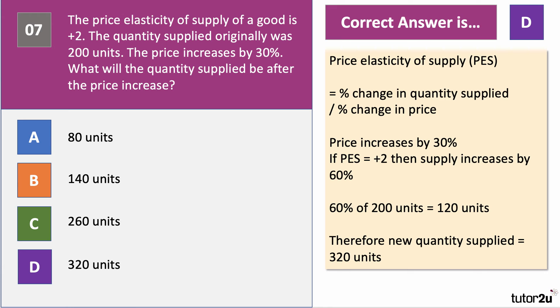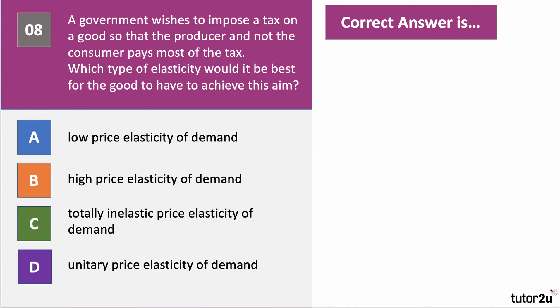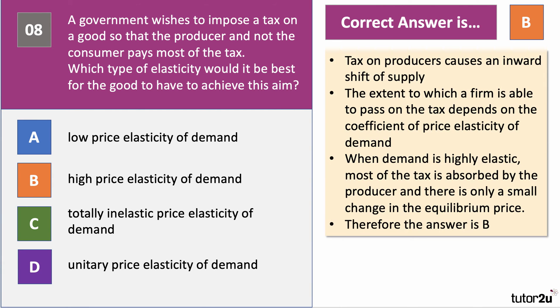Here's question eight. The government wishes to impose a tax on a good so that the producer, and not the consumer, pays most of the tax. Which type of elasticity of demand would it be best for the good to have to achieve this aim? The right answer is B — high price elasticity of demand, i.e. elastic demand. A tax on producers causes an inward shift of supply. When demand is highly elastic — price elasticity greater than one — the producer has reduced ability to pass on the tax, so they must absorb most of it, and there is only a small change in the price the consumer pays.